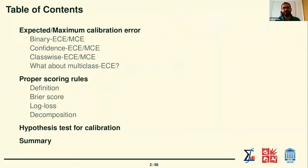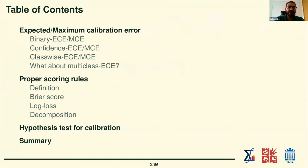First we will talk about calibration error. Then we will cover proper scoring rules, and for these we have some well-known scoring rules and how they can be decomposed into different terms. We will see why there isn't a multi-class ECE yet, and we will cover a hypothesis test which will help you determine if your classifier is calibrated or not, and then a summary.